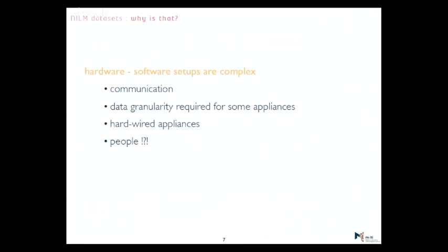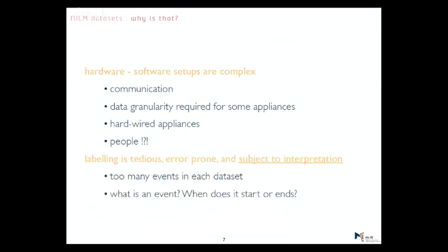Why is that? So it's hard to build all the hardware software platforms that actually work, all the communication issues, Wi-Fi communications. The data granularity that you need for some appliances is not the same for all the appliances. So for example, clothes washers, you will see that they need a lot more granularity to be labeled. You have hardwired appliances, how can you put a plug on these appliances. And then we saw yesterday, Grant talking about people that disconnect stuff, and then you suddenly lose your data. And then labeling is tedious, error-prone, and subject to interpretation. Even between us NILM researchers, we might interpret an event in a different way. When does it start? When does it end? So even if we label datasets, we might have different labeling strategies.